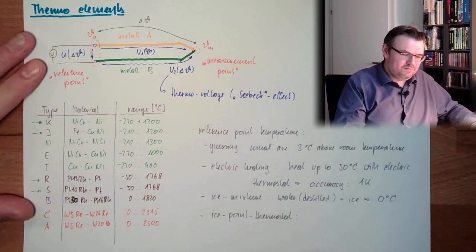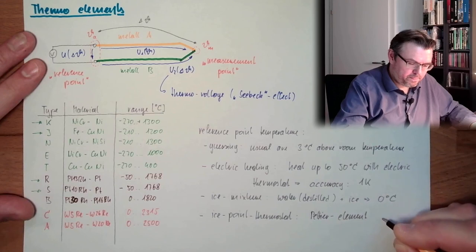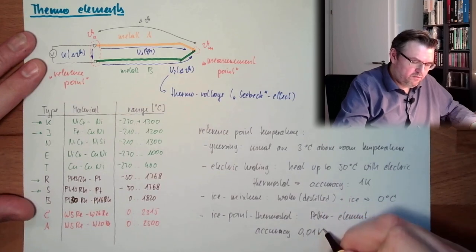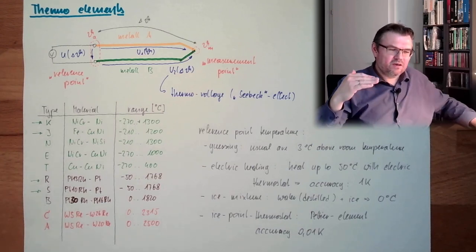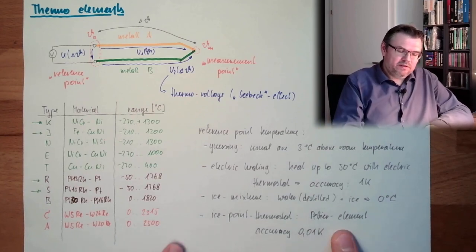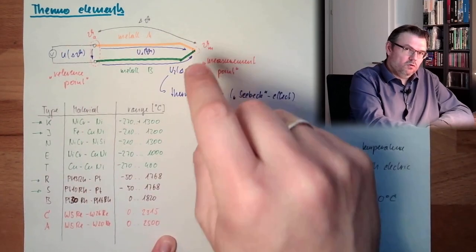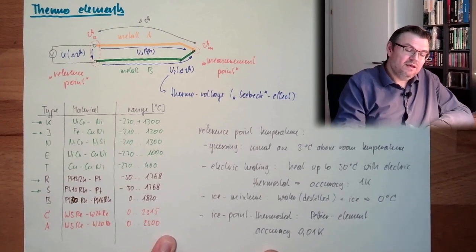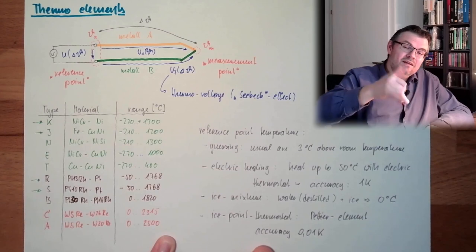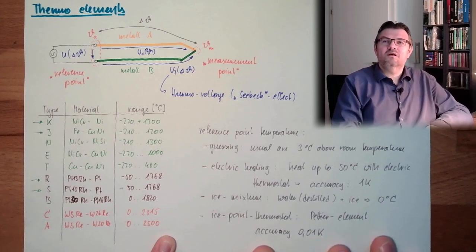These are working with a Peltier element and have an accuracy of 0.01 K. So it's held electrically controlled with a Peltier element which can heat and cool. By the way, a Peltier element is nothing else than a thermo element. However, we are not measuring the voltage, we are applying the voltage. If we apply a voltage in either direction, this will get hot or cold. So it's the same effect but the other way around. Here we are measuring the thermo voltage, and here we are applying a voltage which will result in a temperature gradient.